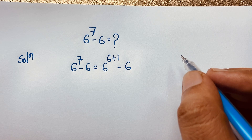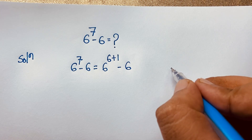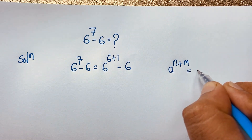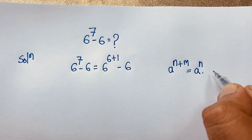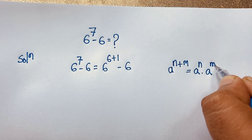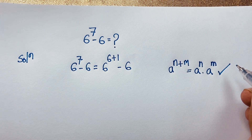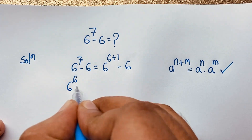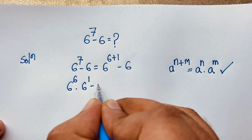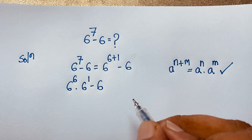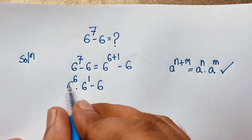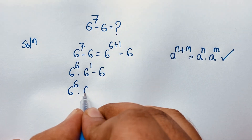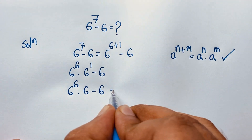According to the exponential formula, a to the power (n plus m) equals a to the power n times a to the power m. Using this formula, we get 6 to the power 6 times 6 to the power 1, minus 6. Now, 6 to the power 1 is just 6.